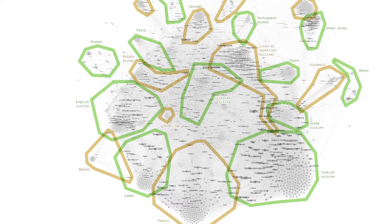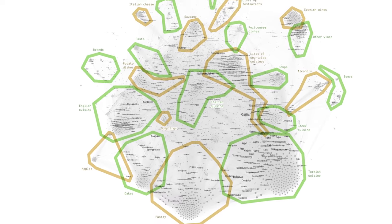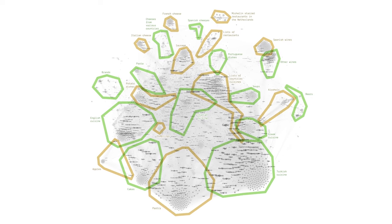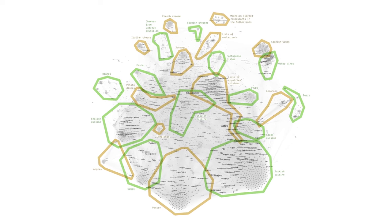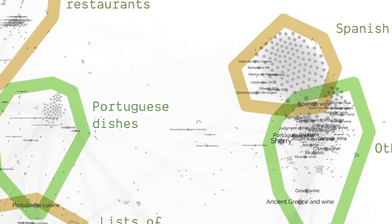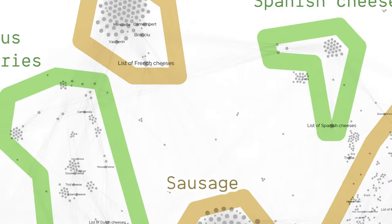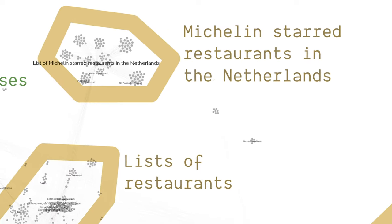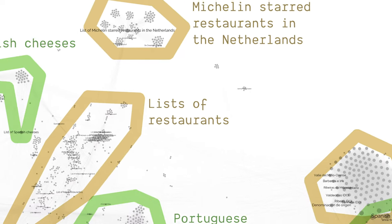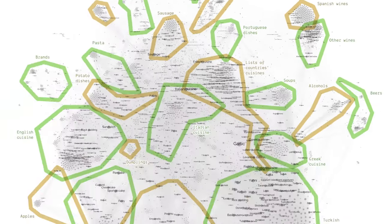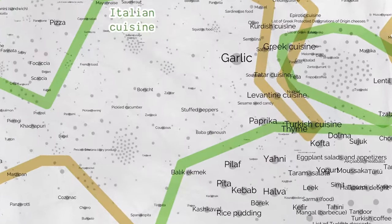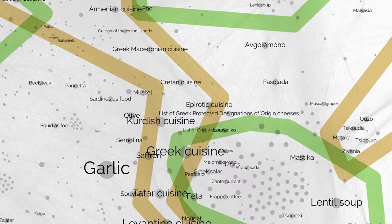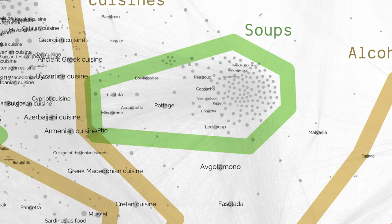We can compare the situation of different countries and hypothesize what is important to Wikipedia editors who document that country. Spain is about wine. Portugal is about its dishes. France is about cheese. The Netherlands about restaurants. Similarly, we can hypothesize the importance of certain ingredients or types of dishes. Garlic is important, notably in Greek and Turkish cuisine.